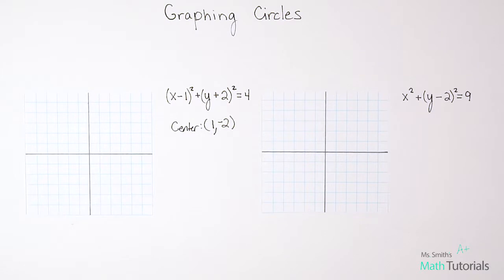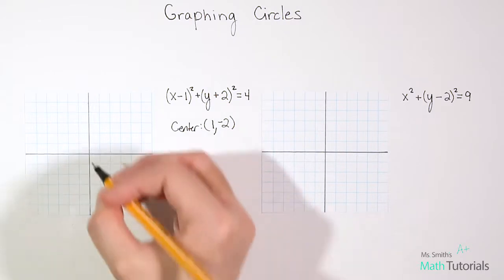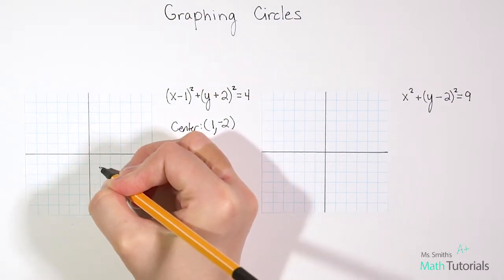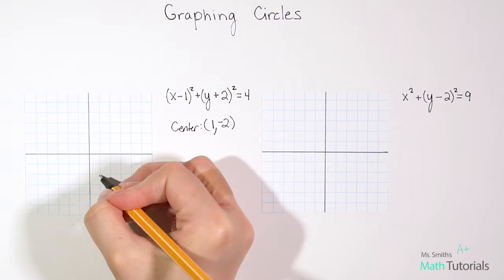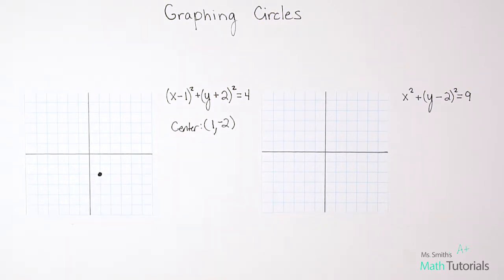So we know the center of this circle is at positive 1, negative 2. So let's actually plot that point on the graph. Positive 1, negative 2 means we go down 2. So there's our center point.